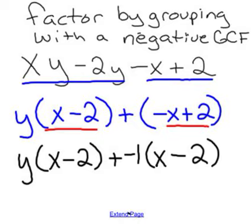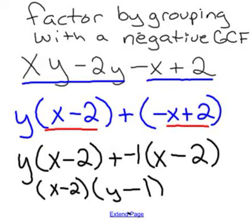So now they match exactly and we can finish our factoring. So we'd have x minus 2 as a greatest common factor of the whole thing now of our two groups. And y plus a negative 1 which is the same as y minus 1. So here's our solution.